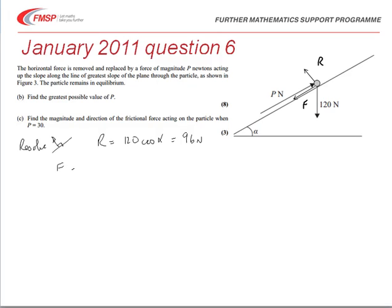We can therefore calculate the frictional force because we know that F max equals mu R. With a value of mu equal to a half, this is equal to 48 newtons.